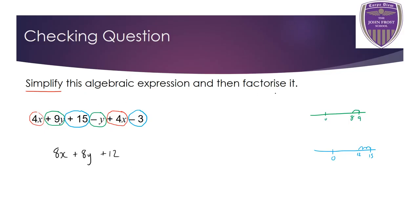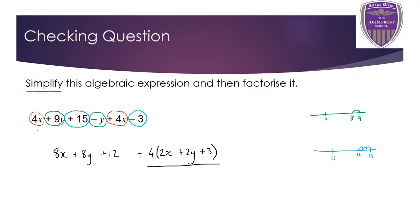Now I've been asked to factorize 8x + 8y + 12. Hopefully you can see that 4 goes into 8, 8, and 12. So 4 times 2x gives 8x, 4 times 2y gives 8y, and 4 times 3 gives 12. Once simplified and factorized, the result is 4(2x + 2y + 3). Well done if you got all of that correct. Thank you for watching and stay safe.